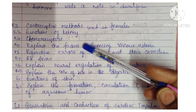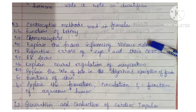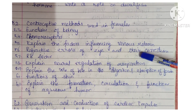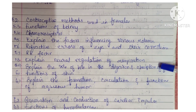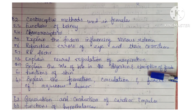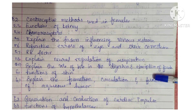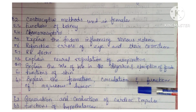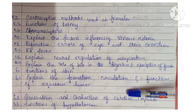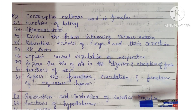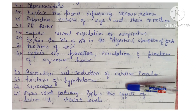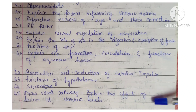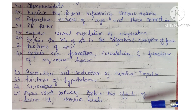Further physiology topics: contraceptive methods used in females, functions of kidneys, chemoreceptors, factors influencing venous return, refractive errors of eyes and their correction, RH factor, neural regulation of respiration, role of bile in digestion and absorption of food, functions of skin, formation, circulation and function of aqueous humor, generation and conduction of cardiac impulse, functions of hypothalamus, sarcomere, draw a visual pathway, and effects of vision at various levels.